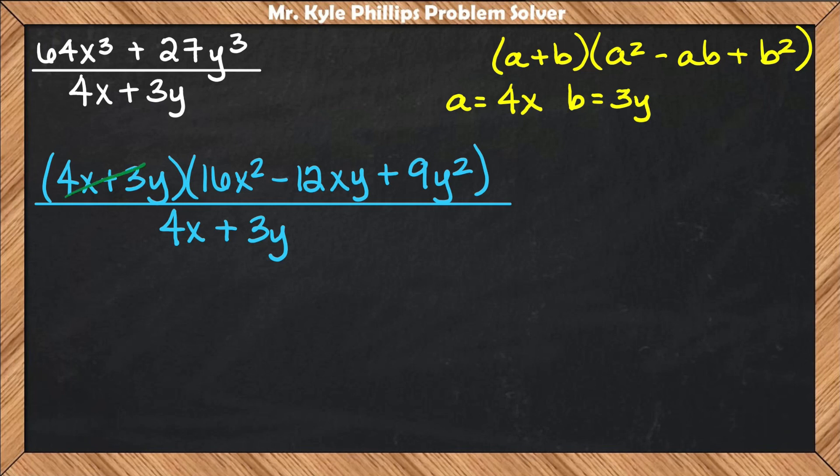This will all be over my denominator of 4x + 3y. This binomial can reduce with this binomial, and my solution is 16x² - 12xy + 9y².